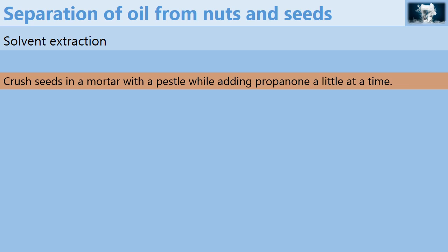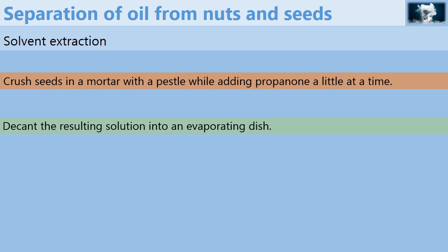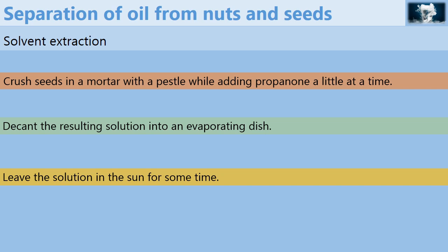Next you will decant the resulting solution into an evaporating dish. After that you leave the solution in the sun for some time. At this point the solution of oil and propanol left in the sun will separate through a process called evaporation.